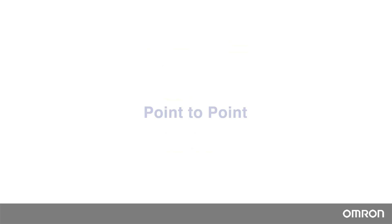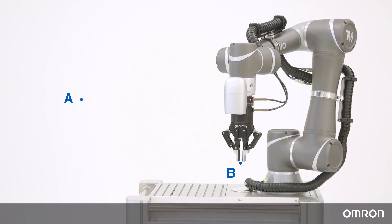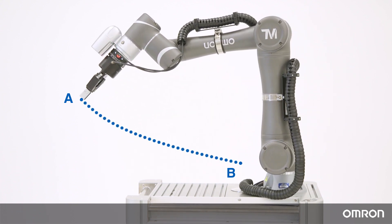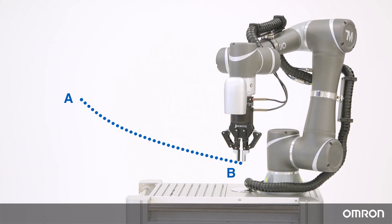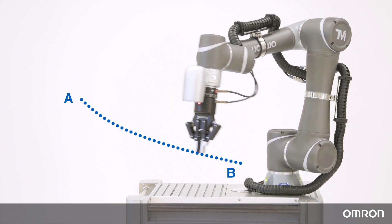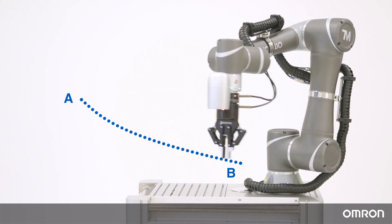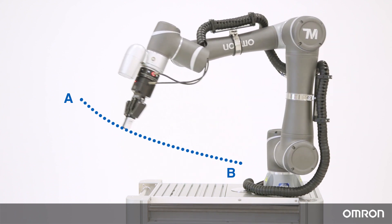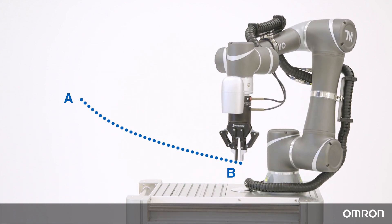First, let's dive into point-to-point motion. Point-to-point is the fastest way to get from point A to point B, meaning that you cannot designate the actual path the cobot will take. It is best to use point-to-point if there is no danger of colliding with objects that are within the path from point A to point B.